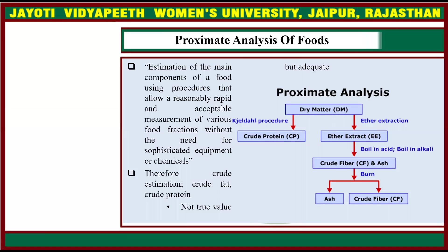Proximate analysis is done basically on the dry matter. Crude protein is measured by the Kjeldahl procedure, ether extract by ether extraction, then crude fiber by boiling acid and boiling alkali. Ash is determined by burning or by charring, and crude fiber is also determined by charring.